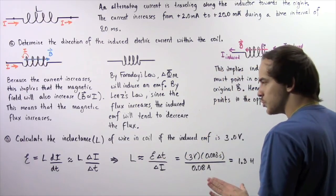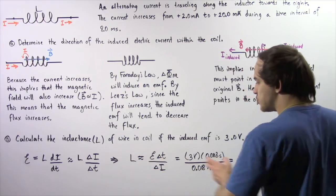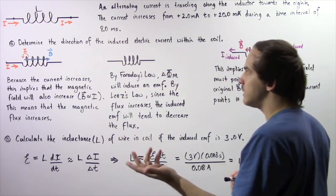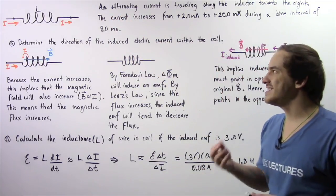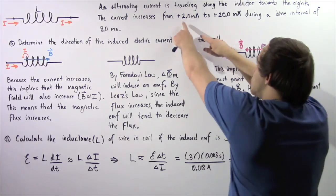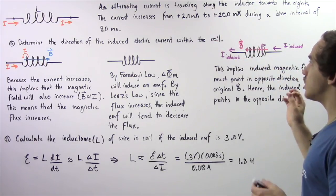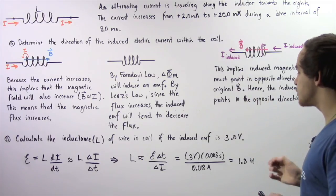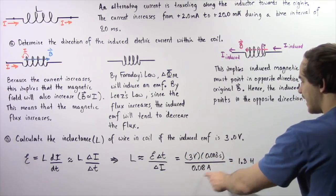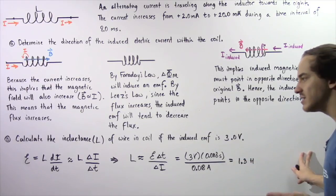Our time interval is 8 milliseconds, which equals 0.008 seconds. Our initial current is 2 milliamps and our final current is 20 milliamps, so the change in current is 20 minus 2 equals 18 milliamps. Converting to amps by dividing by 1000 gives 0.018 amps. Plugging in: L ≈ 3 volts × 0.008 seconds / 0.018 amps, which gives approximately 1.3 henrys. This is the self-inductance found within our coil of wire.